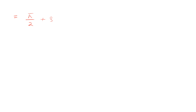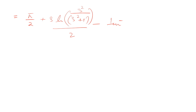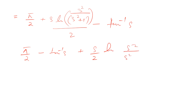Applying the limits from s to infinity, the final answer I get is π/2 plus s·ln(s² / (s² + 1)) divided by 2, minus tan⁻¹(s). This can be rewritten as π/2 - tan⁻¹(s) plus (s/2)·ln(s² / (s² + 1)).